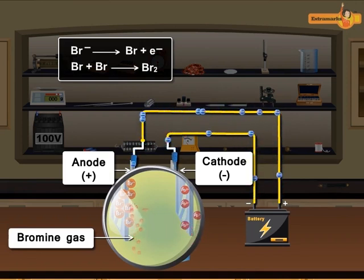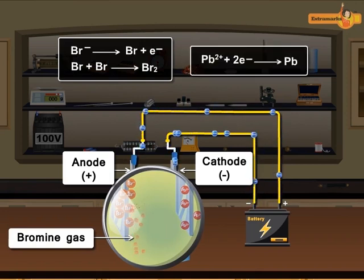Positively charged lead ions move towards the cathode, which is the negative electrode, where reduction takes place and lead ions are converted into lead by gaining two electrons.